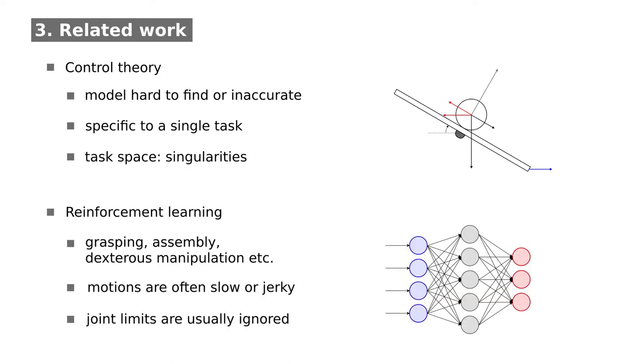In recent years, model-free reinforcement learning has been applied to industrial tasks like grasping, assembling, and dexterous manipulation. Reinforcement learning is a very flexible technique, but as of yet, the generated motions are often slow or jerky and do not respect kinematic joint limits.